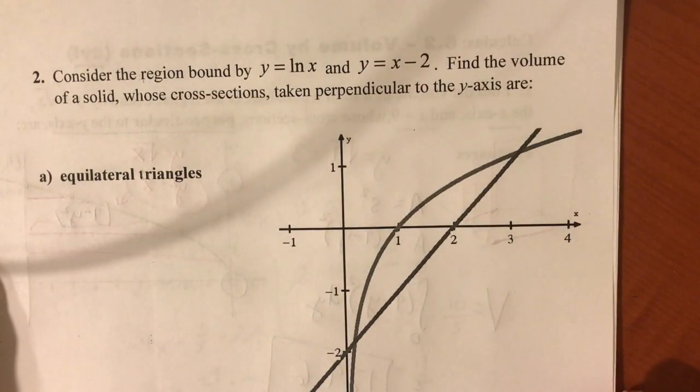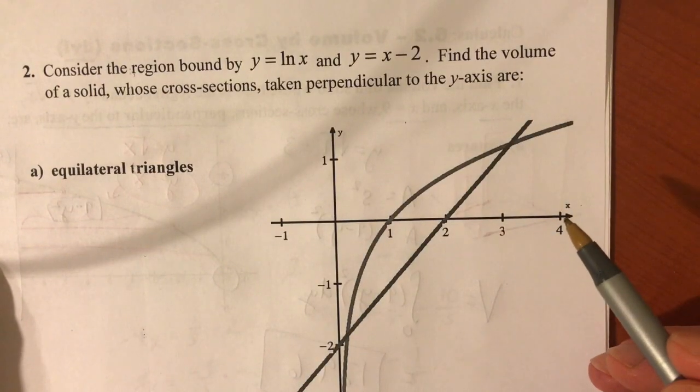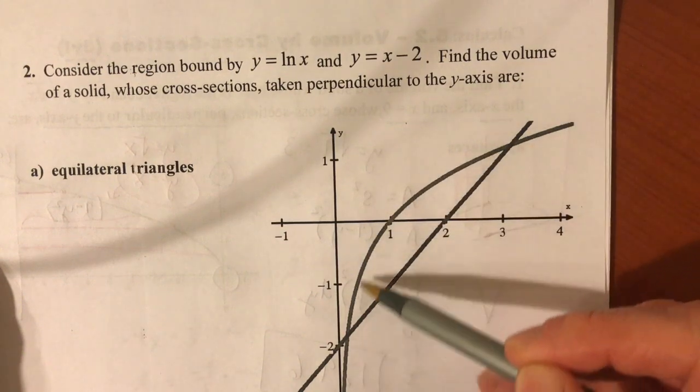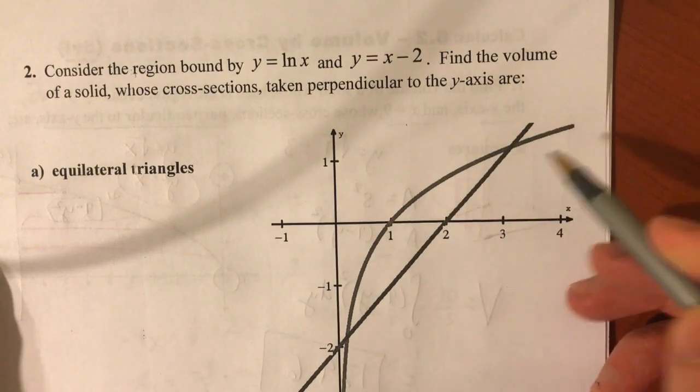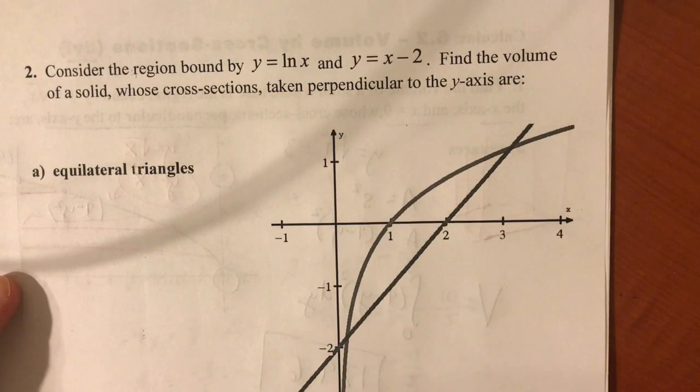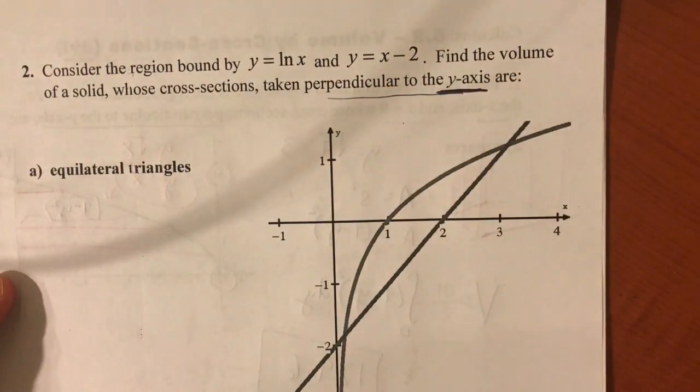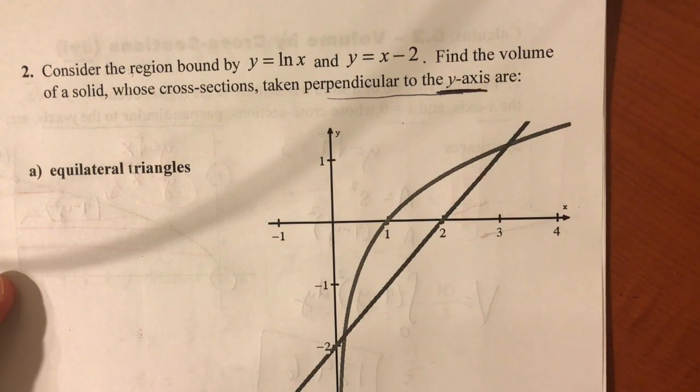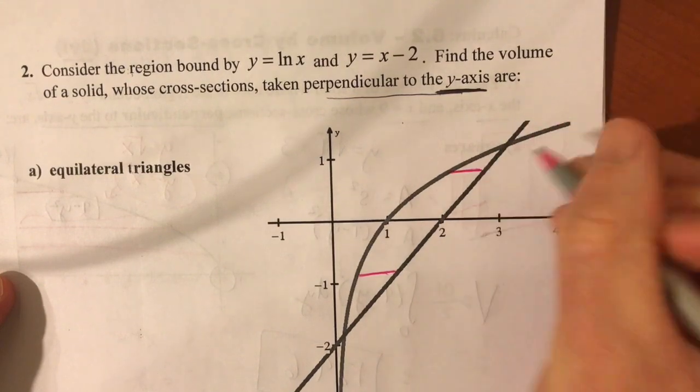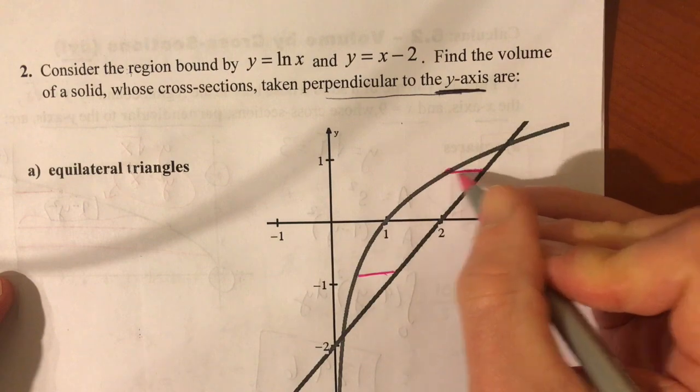Hey kids, we are back with a second example of doing cross sections perpendicular to the y-axis. This time we're talking about the region bound by the graph of y equals ln of x and the line y equals x minus 2. Just again to reiterate that when you see the phrase that you're going perpendicular to the y-axis, that's when you would be slicing in this direction and regardless of where you're at, when you go horizontally like this, you are talking about the difference in the x coordinates.